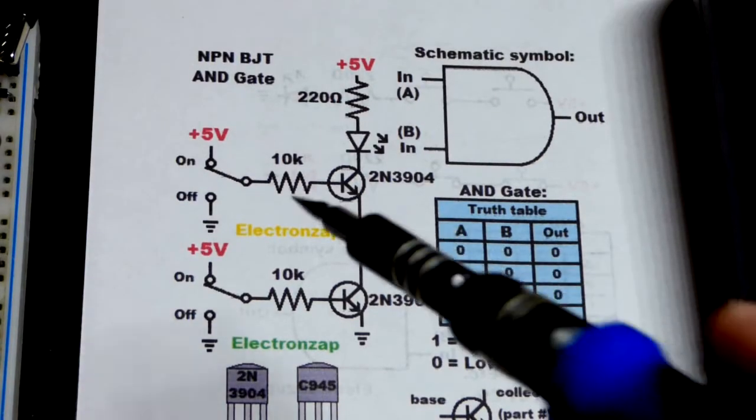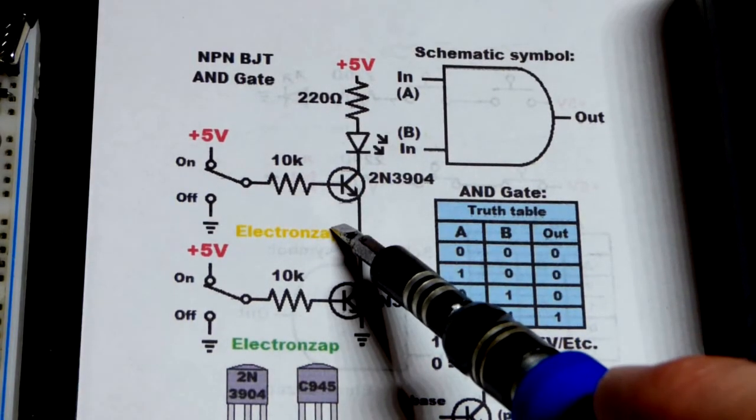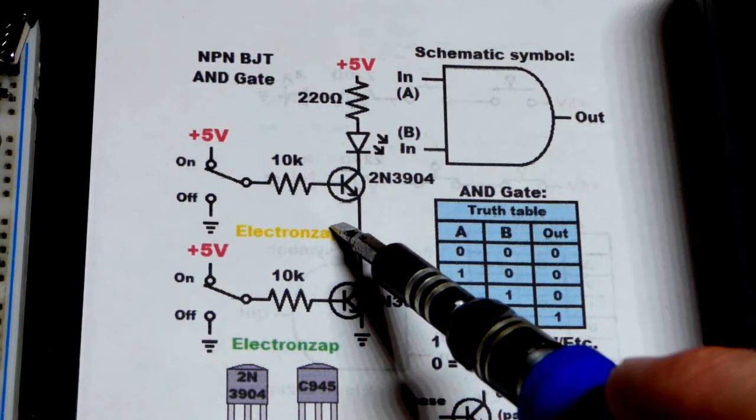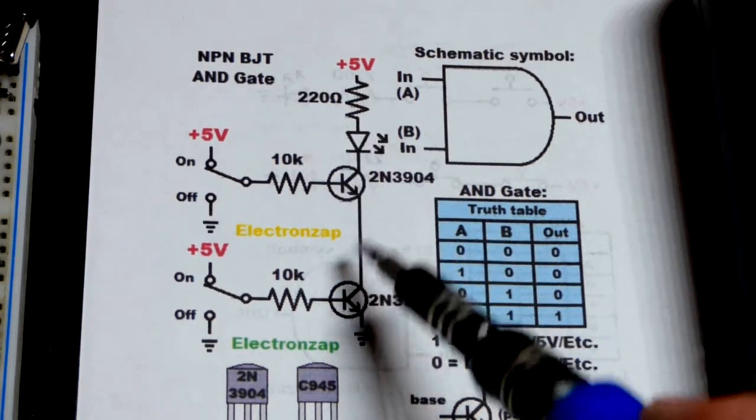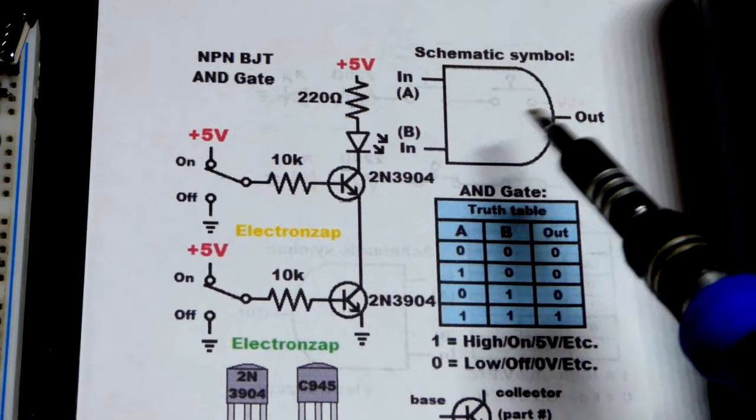So now in this video we're going to make an NPN bipolar junction transistor version of the AND logic gate. Both transistors have to be on. That is the main takeaway.